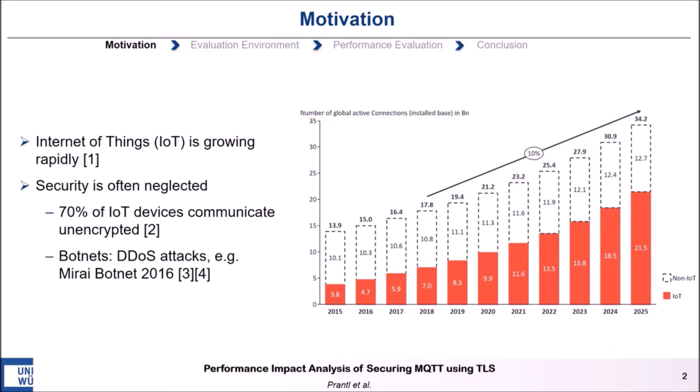This can, for example, be seen in that 70% of the IoT devices are still communicating unencrypted, and that the lack of IoT security has been exploited in the past in forms of botnets, like the Mirai botnet, which performed DDoS attacks. Because of these reasons, we decided to analyze how commonly used security mechanisms can be applied to the IoT domain and how this would affect the performance of IoT devices. Concretely, we decided to use TLS and analyze how it would affect the performance of the commonly used IoT protocol MQTT.